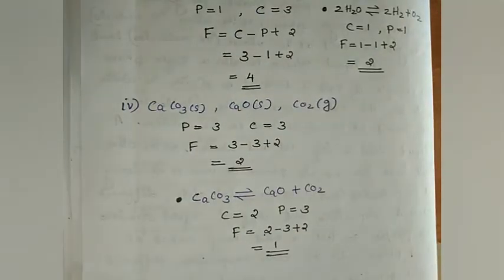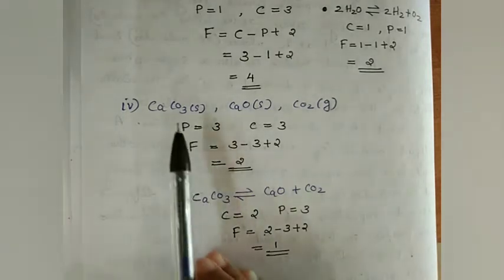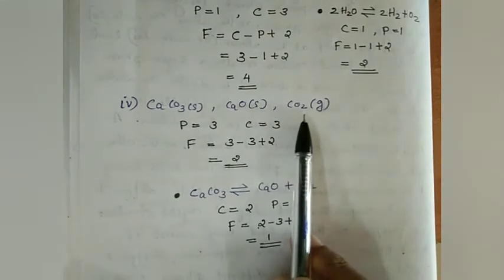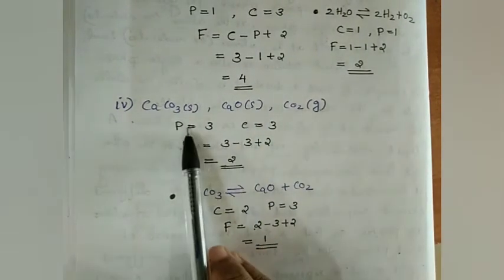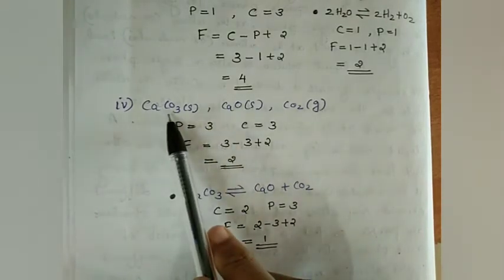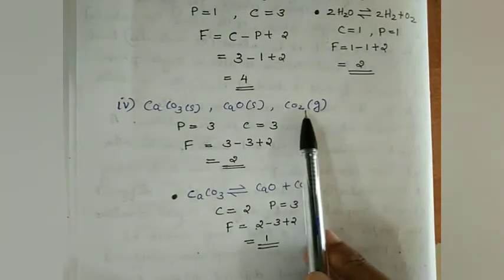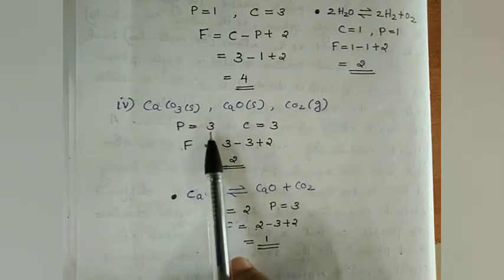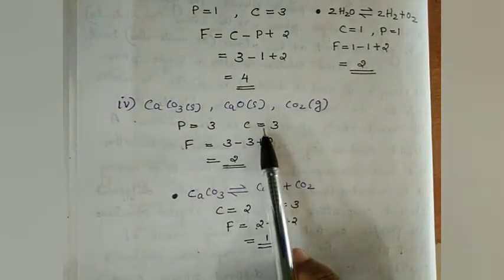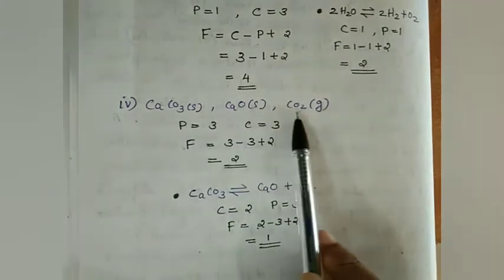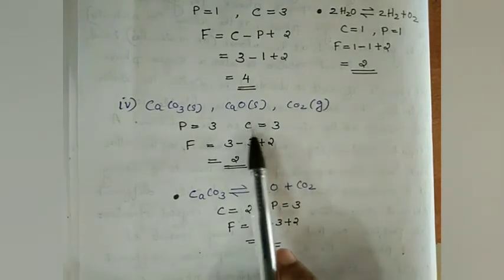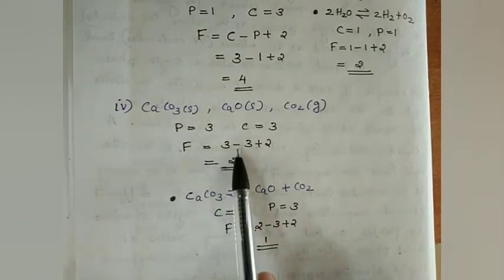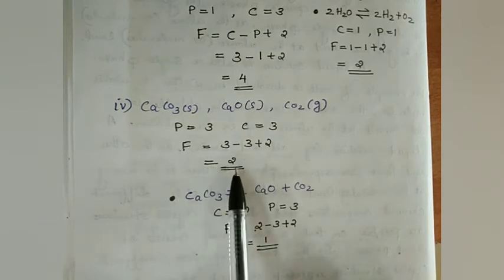In another example, we take a mixture of CaCO₃ solid, CaO solid, and CO₂ gas. Here, P = 3 because two solids are in different phases and CO₂ is in the gaseous phase, giving total phases equal to 3. The components C = 3 — that is, CaCO₃, CaO, and CO₂ are different components. Then F = 3 - 3 + 2 = 2.